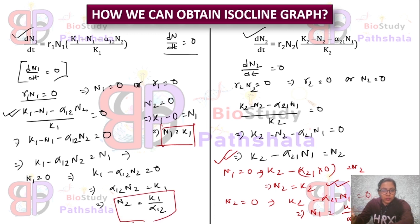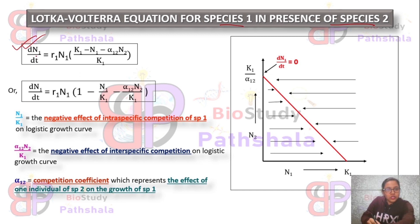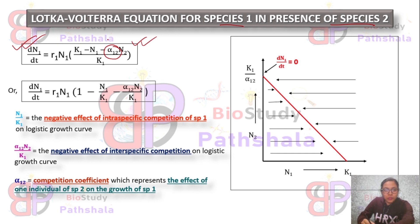Now we will see the interpretation of the Lotka-Volterra model. The Lotka-Volterra equation for species 1 in the presence of species 2 is: dN1/dt = r1·N1 × (K1 − N1 − α12·N2) / K1. This is a modified version of the logistic growth curve equation, and the term α12 is absolutely new compared to the standard logistic growth curve.